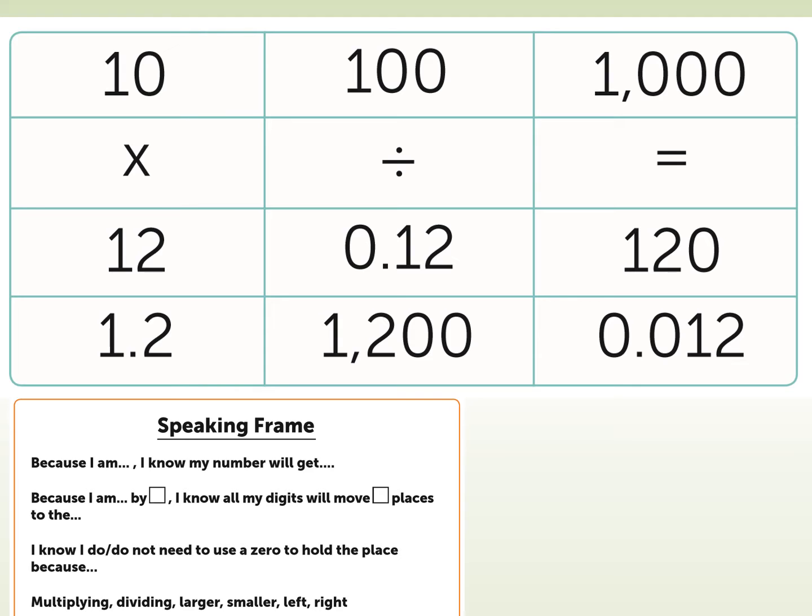So it doesn't have to be something times something equals. It could be something equals something times something or something equals something divided by something. You could even do something times something equals something divided by something and do a balance equation like that if you want to do some greater depth. So just a quick example. I'm going to do 12 times 10 equals 120.